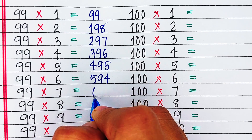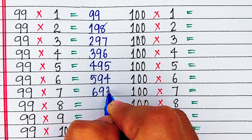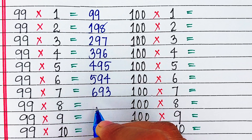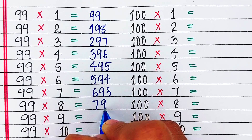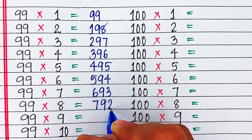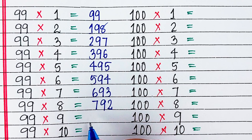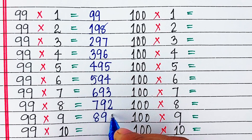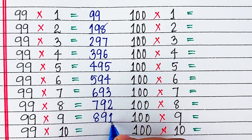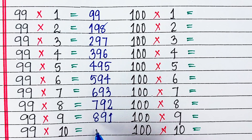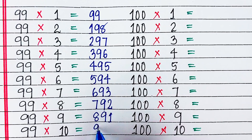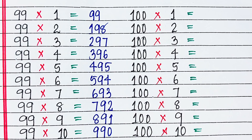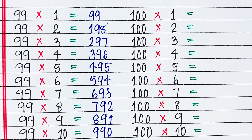99 sevens are 693. 99 eights are 792. 99 nines are 891. 99 tens are 990.